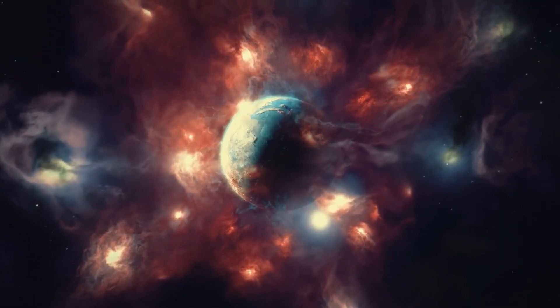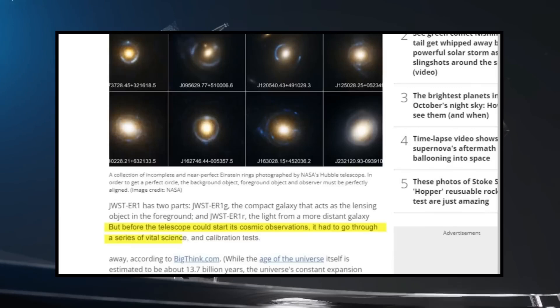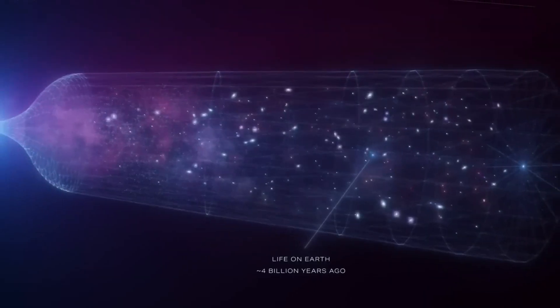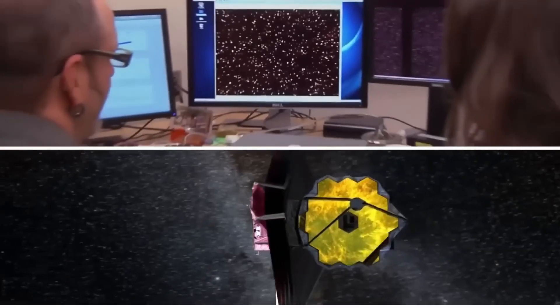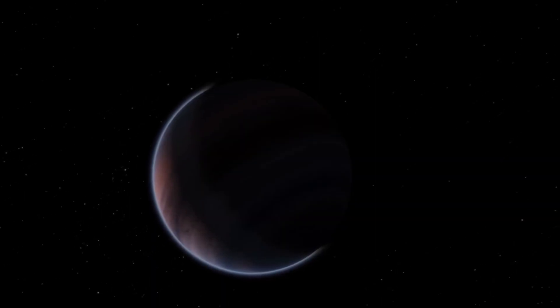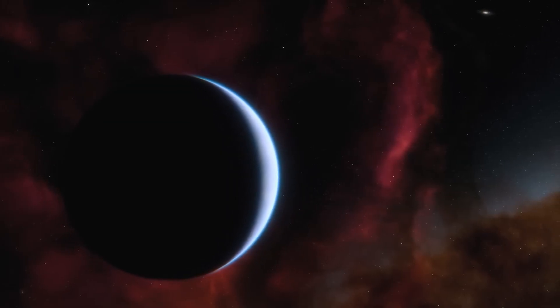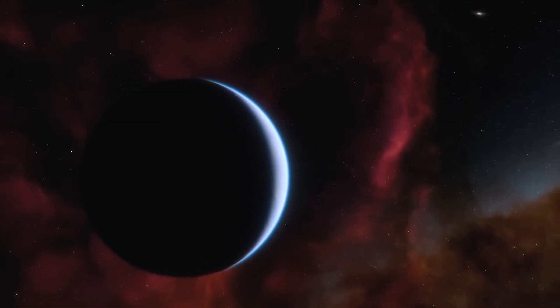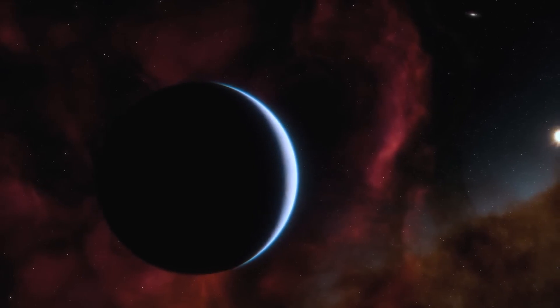In detail, the exoplanet Epsilon Indy AB has a mass that is six times greater than that of the largest planet in the solar system. But that's not all. In the same breath, the alien world also embodies the coldest and oldest exoplanet that has been directly imaged so far.